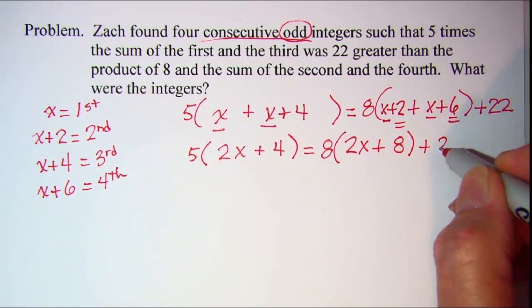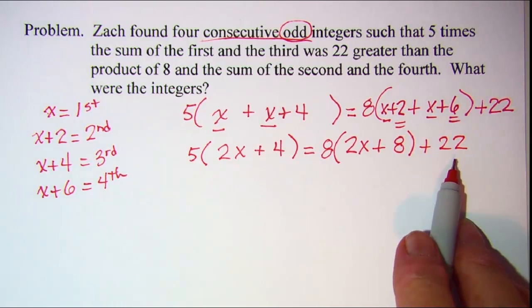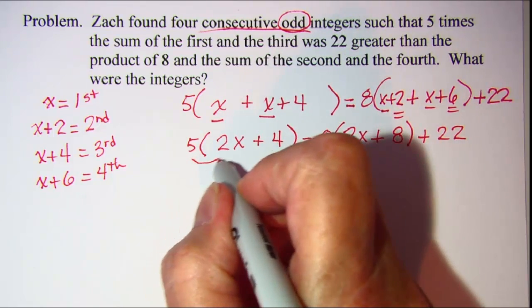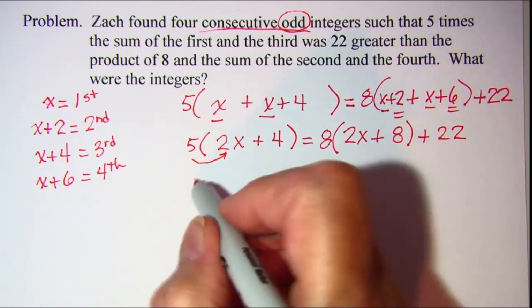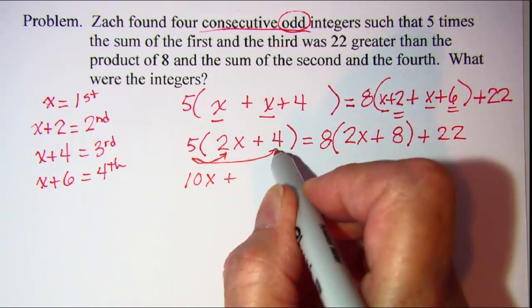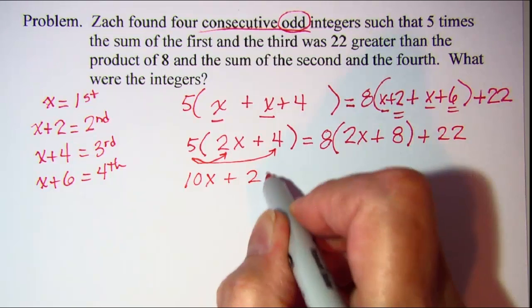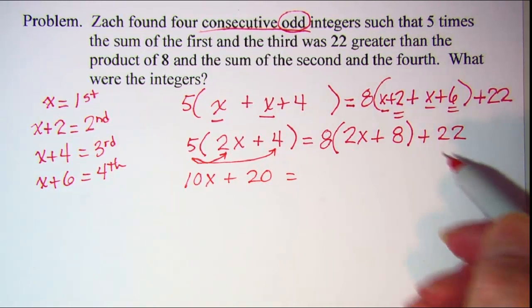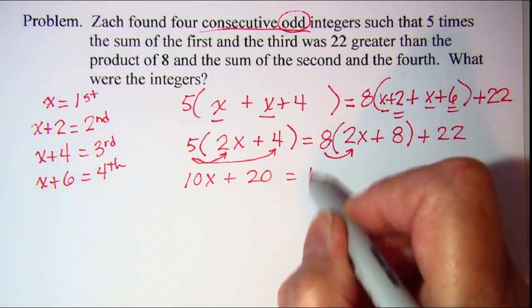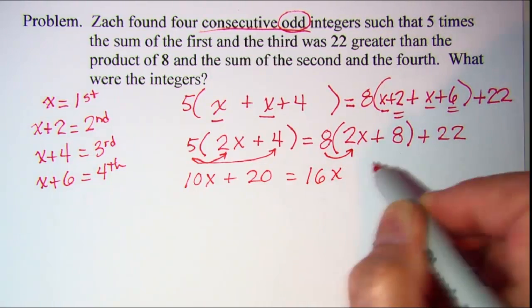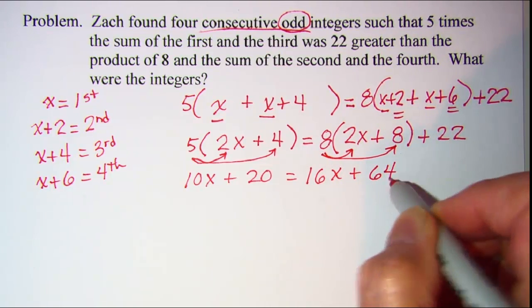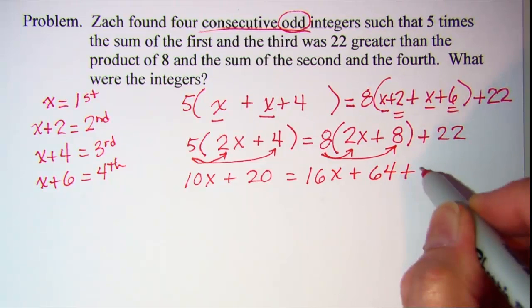Now let's distribute. 5 times 2x is 10x. 5 times 4 is 20. On the right side I'll distribute here as well. 8 times 2x is 16x. 8 times 8 is 64 and then just copy the rest of the problem.